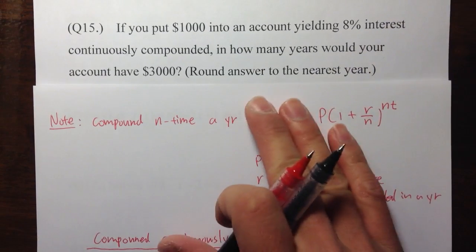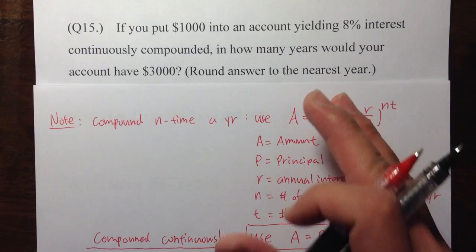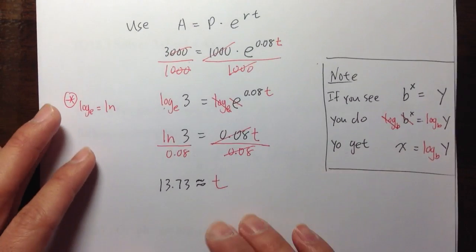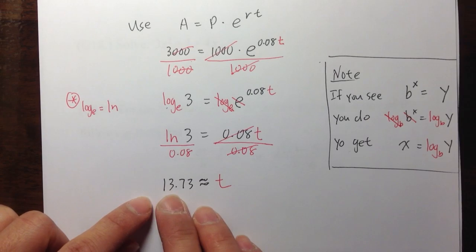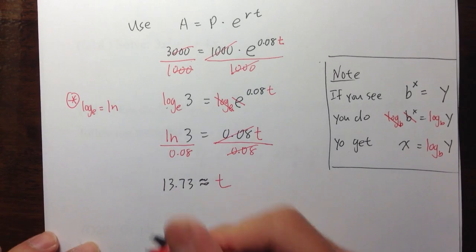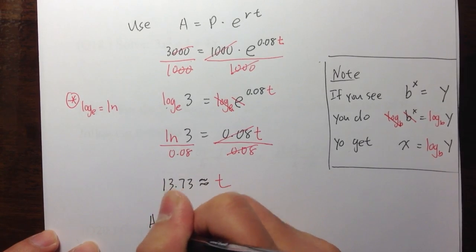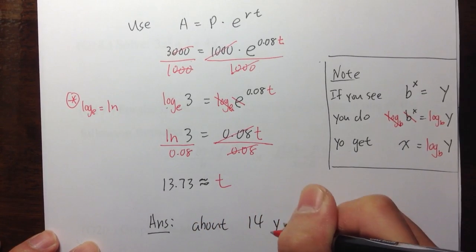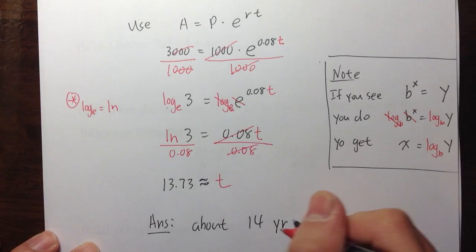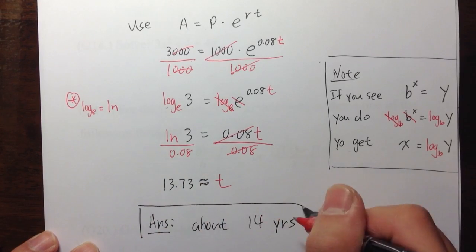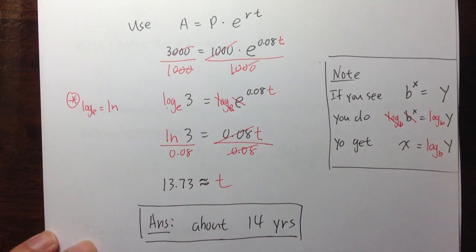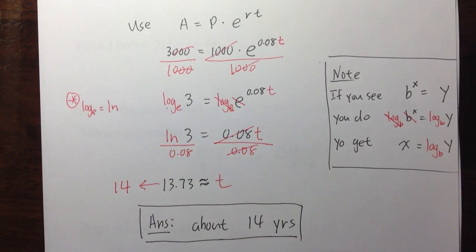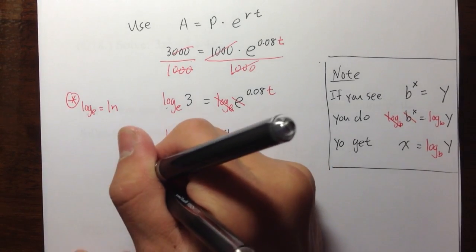The directions say to round your answer to the nearest year. Since T is approximately 13.73, we round up to 14 years. So the answer is about 14 years.